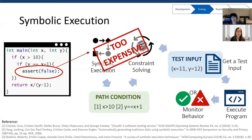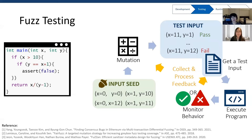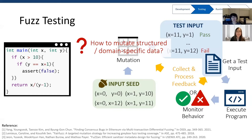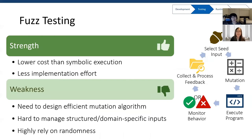To solve this problem, fuzz testing appears. It randomly generates test inputs, saving time on code analysis. Different from symbolic execution, it works in a loop: after each test, it collects and processes feedback, applies random mutations on the input to get a new test input, and runs again. The key challenge during this process is how to mutate data — it is even more challenging to mutate structured and domain-specific data. In summary, fuzz testing has lower cost and less implementation effort than symbolic execution. However, it is challenging to design an efficient mutation algorithm and manage structured inputs, and it highly relies on randomness.